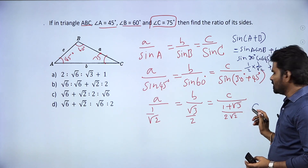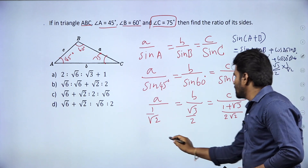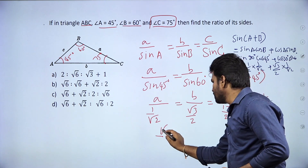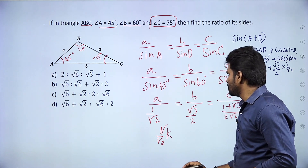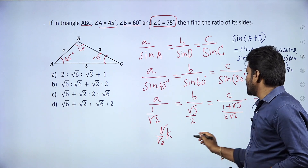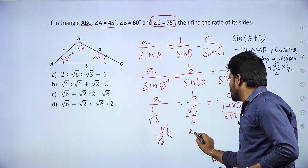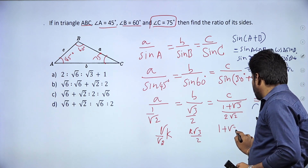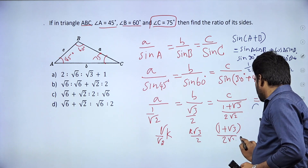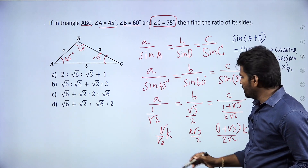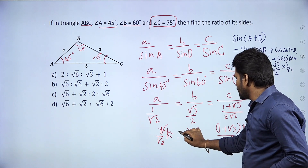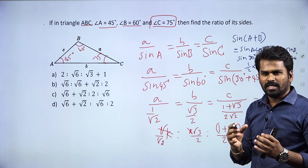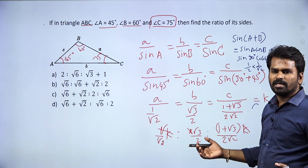To express with a constant k: a = (1/√2)·k, b = (√3/2)·k, and c = ((1 + √3)/(2√2))·k. When k cancels, we can express the ratio. For the ratio, the denominator should be 1, so we take the LCM.